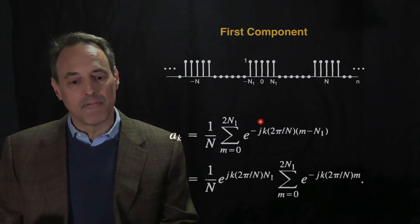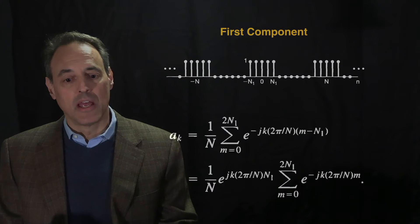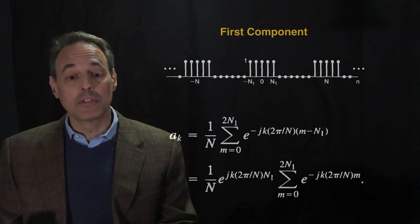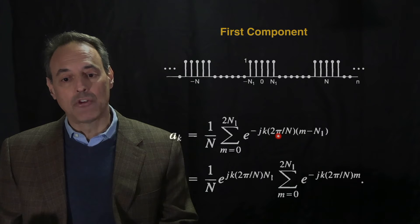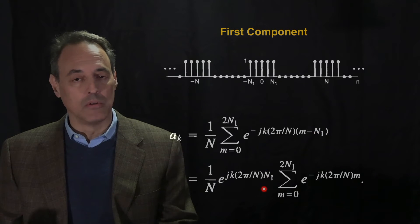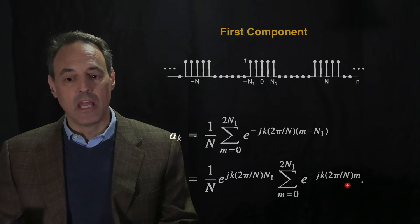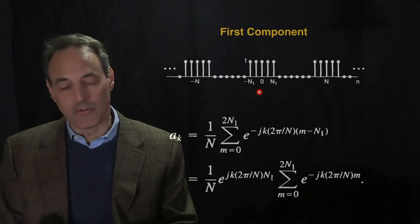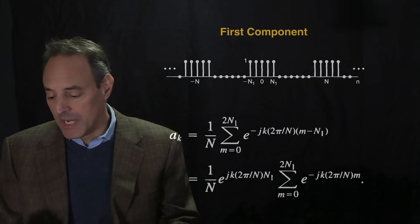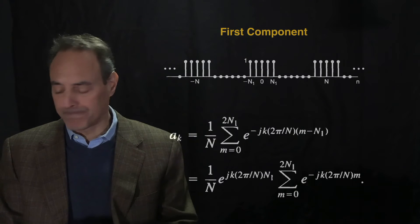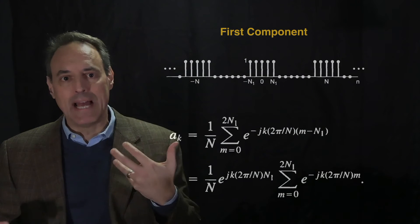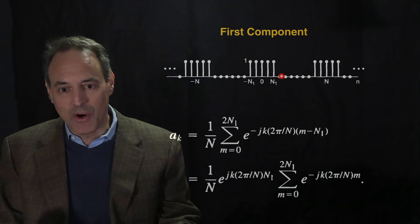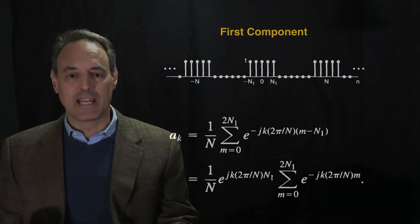To compute the coefficients a(k), notice that this sum is over m, and the term e to the i·k·(2π/N)·N1 has no m component, so it can be factored out. What's left is the remaining sum — five terms in this picture, or seven terms if N1 equals three. We're integrating against the signal x, which is zero everywhere except those active bins, which is why we only add up those bins.